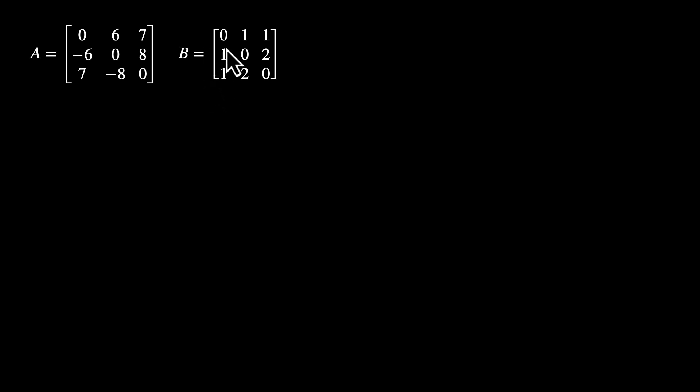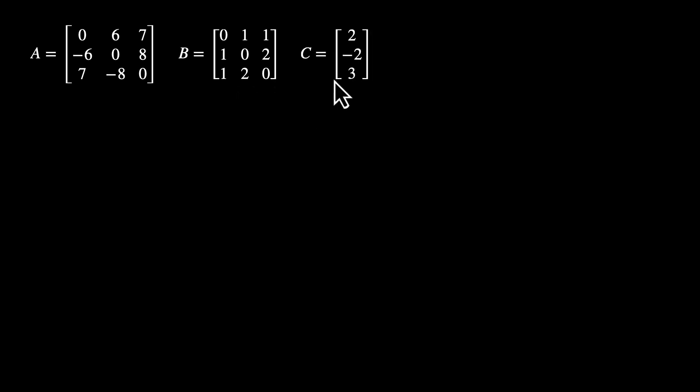We have a matrix A, it's a 3 by 3 matrix: 0, 6, 7, minus 6, 0, 8, 7, minus 8, 0. We also have B, also a 3 by 3 matrix: 0, 1, 1, 1, 1, 0, 2, 1, 2, 0. And then we have C, a 3 by 1 matrix with 3 rows and only 1 column: 2, minus 2, 3.